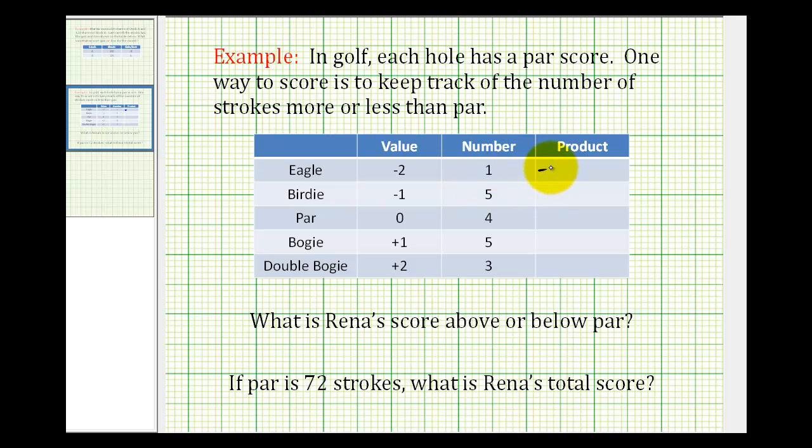So here we have negative two times one. Well, negative times a positive is negative, so that's negative two. Here we'll have negative one times five. Again, a negative times a positive is negative, so this is negative five. Here we're going to have zero times four, which is equal to zero.